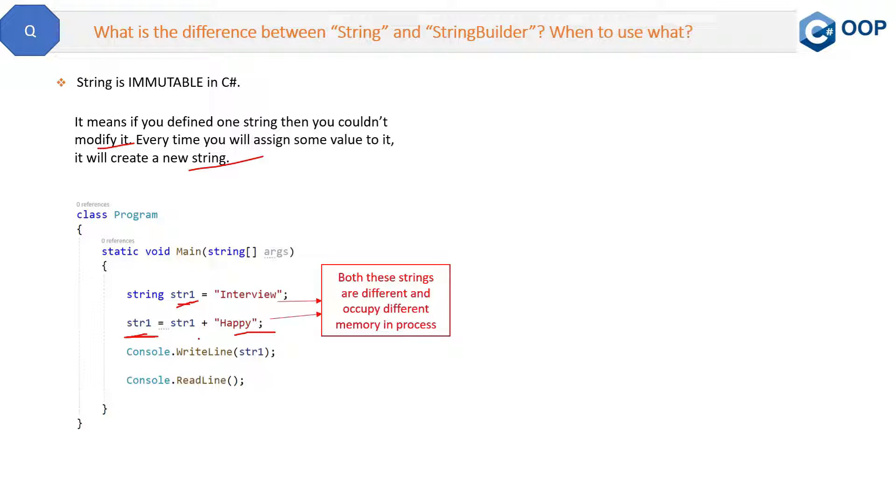But no, these are different because strings are immutable. Once you assign the value to a string, then if you will try to modify it, then it will create the new string. So that is immutable and that is what this string is. Now let's see what is StringBuilder then.